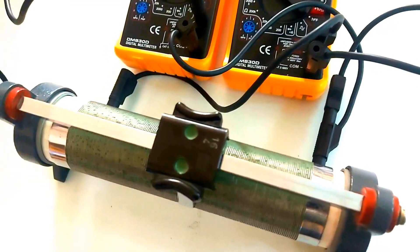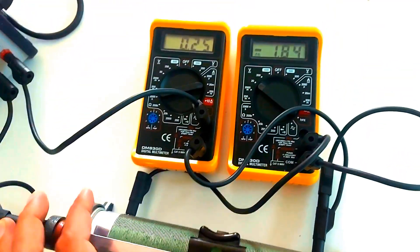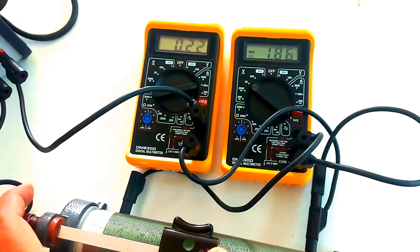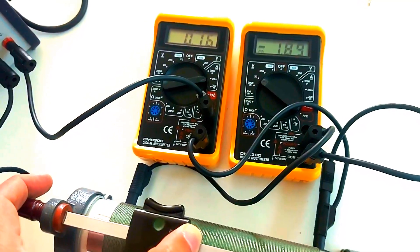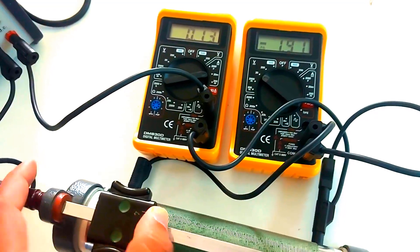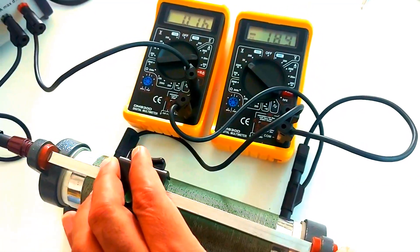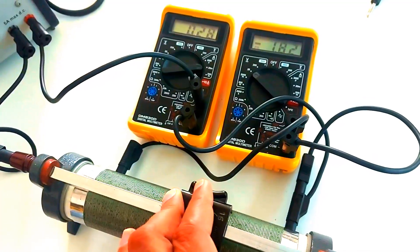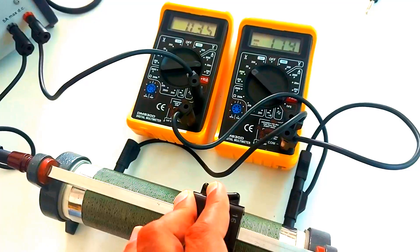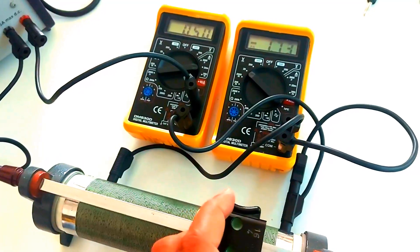Now let's add an ammeter into the circuit to see something even more interesting. The ammeter measures the current, while the voltmeter still shows the voltage. Watch what happens when I slide the contact. As the resistance increases, notice how both the current and the voltage adjust.